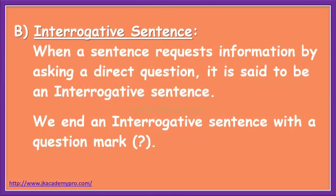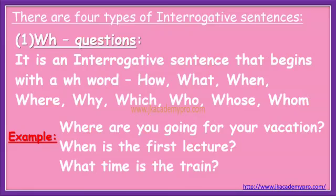The second type is the interrogative sentence. When a sentence requests information by asking a direct question, it is said to be an interrogative sentence. We end an interrogative sentence with a question mark. There are four types of interrogative sentences.